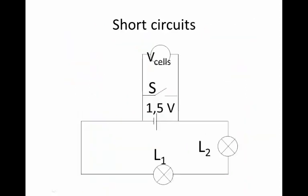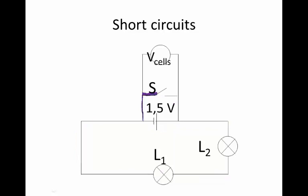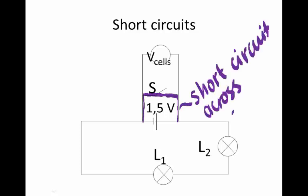Let's look at this circuit as well. Please do not build this circuit because your battery will get flat. Here we have a 1.5 volt battery connected to two bulbs. If we only had this part of the circuit, that would be a complete circuit with a bulb shining. However, across the battery we have placed a switch. At the moment that's not a problem because the switch is open, but the moment that we close that switch, this path here is a short circuit across the cell.